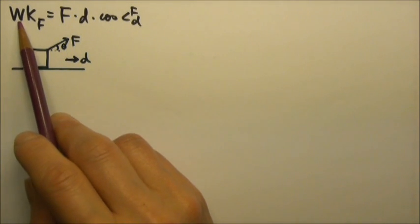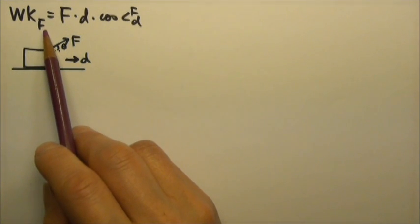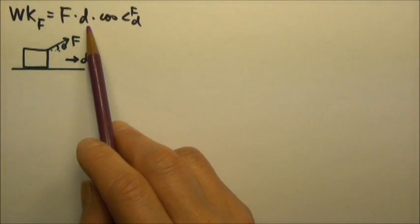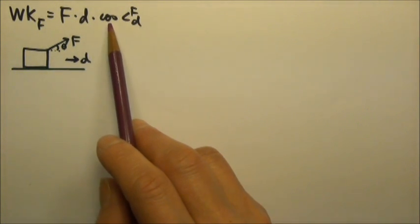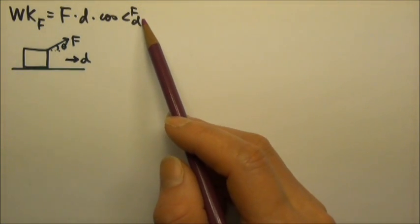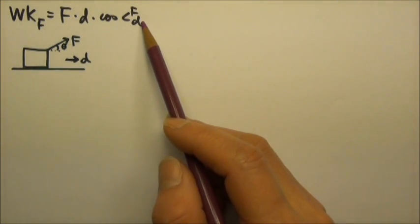We have learned that the work done by a force is the force times the displacement times the cosine of the angle between the force and the displacement.